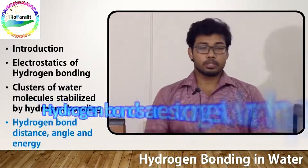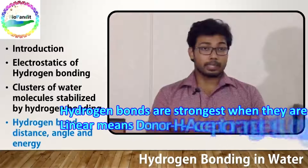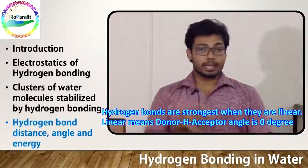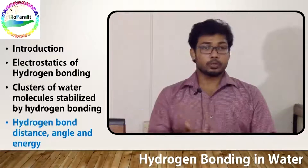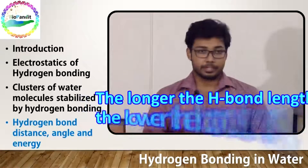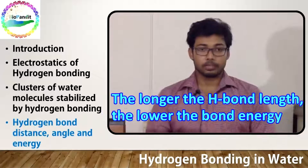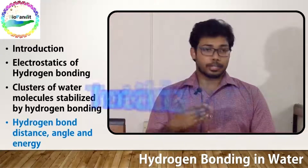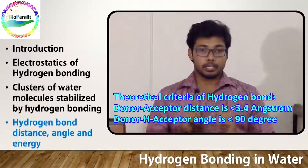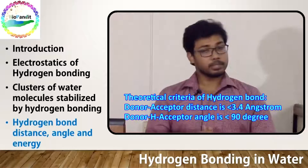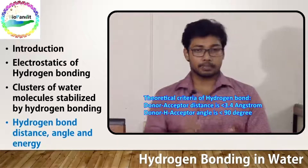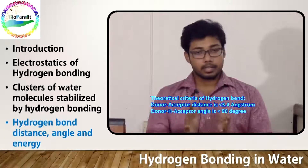Here are some additional facts about hydrogen bonds worth remembering. First, hydrogen bonds are strongest when they are linear. Theoretically, the hydrogen bond angle can vary from 0 to 90 degrees. The longer the bond length, the lower the bond energy. In structural biology, we generally consider a hydrogen bond if the distance between the donor and the acceptor atom is less than 3.4 ångströms in 3D space, and the donor–hydrogen–acceptor angle is less than 90 degrees.